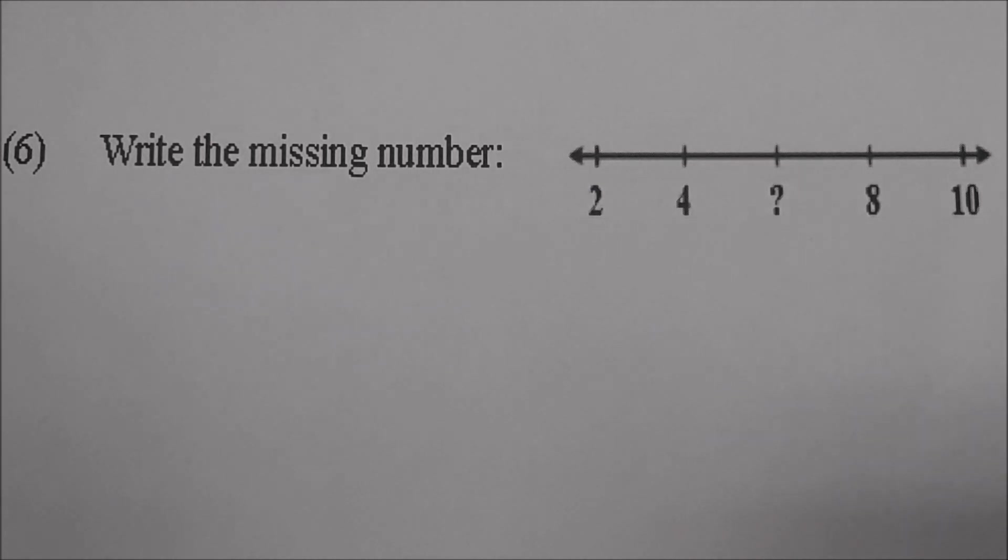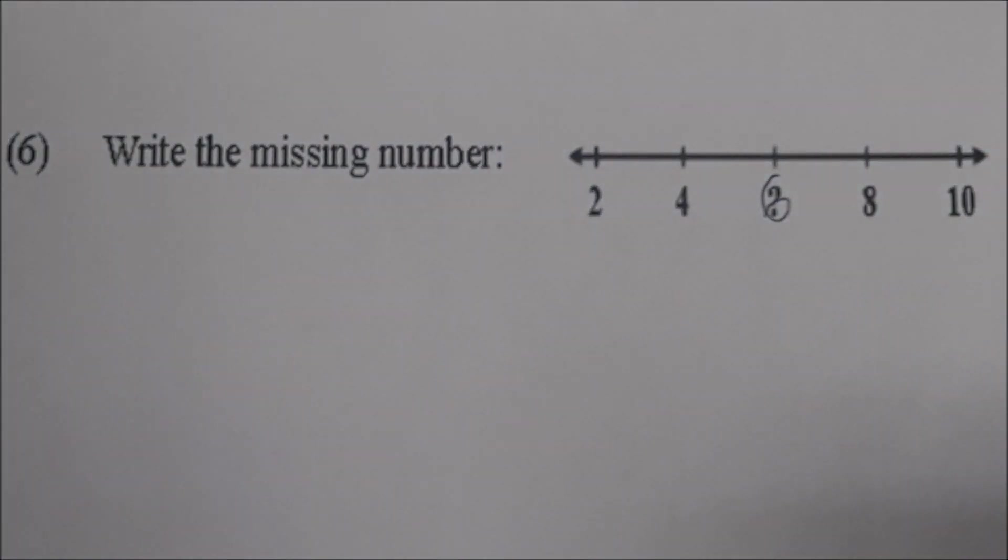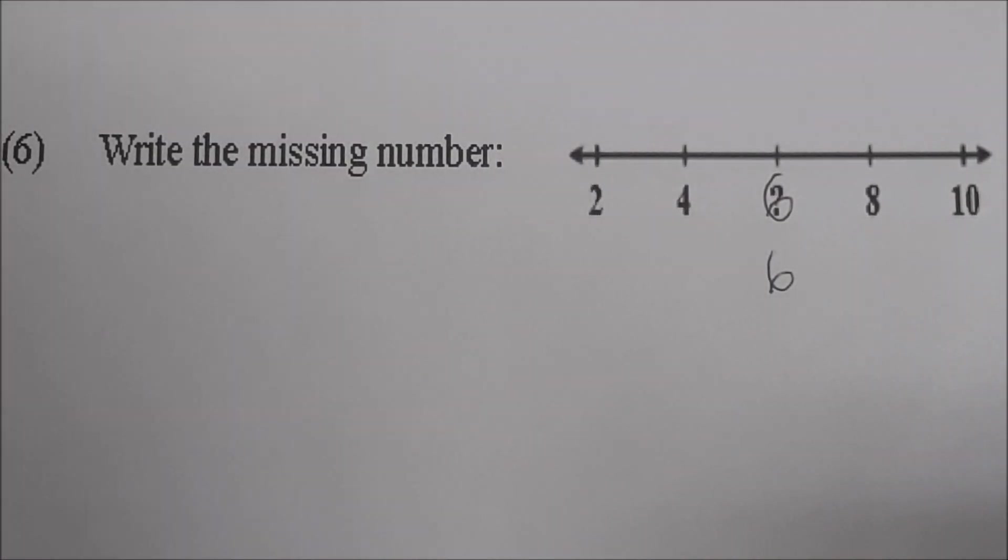Number six Sky. Read it. Write the missing number. And do it for us. Okay write it right below it so we can see it. Right below it. Okay why would you put six for that? How do you know it? Counting in twos. Counting in twos. Count in twos for us. Two, four, six, eight, ten. Very good.